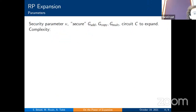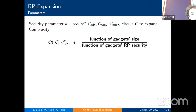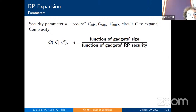The strategy cannot be applied indefinitely due to complexity overhead. To achieve security level kappa, the final circuit complexity can be expressed in terms of the original circuit size and kappa to the power E, where E is a function of gadget size over gadget random probing security. The main goal is to increase security as much as possible to reduce the asymptotic exponent E while keeping gadget sizes reasonable.